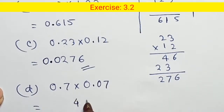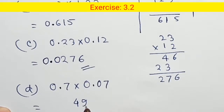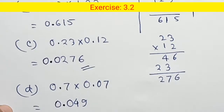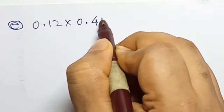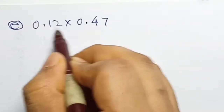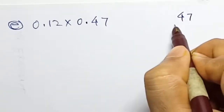Question D: 0.7 into 0.07. Multiply 7 by 7 to get 49. Now count decimal places: 0.7 has 1 decimal digit and 0.07 has 2 decimal digits, so total is 1 plus 2 equals 3. Place decimal point 3 from the right. We need to add a leading zero, so the answer is 0.049.